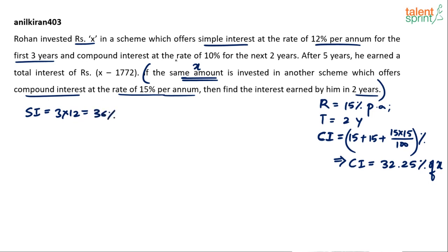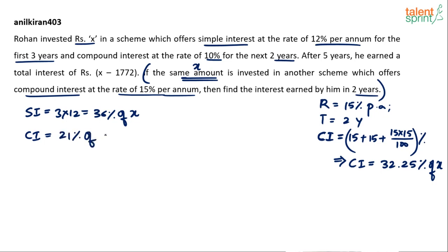Now compound interest at the rate of 10% for the next two years. The simple interest is 36% of x. For compound interest at 10% for two years: using the formula, 10 plus 10 plus (10 times 10 divided by 100) equals 20 plus 1, which is 21%. So compound interest is 21%. But will it be 21% of x? No, it will not be 21% of x.